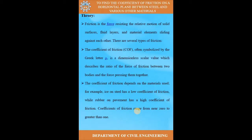Friction is a force resisting the relative motion of solid surfaces, fluid layers, and material elements sliding against each other. The coefficient of friction, often symbolized by the Greek letter μ, is a dimensionless scalar value which describes the ratio of the force of friction between two bodies and the force pressing them together. When a body moves on another body, there is a force tending to move it and a resistive force tending to stop it.